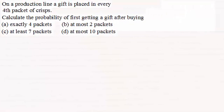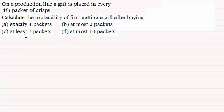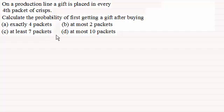Welcome to another video in my series on the geometric distribution. In this video I've got a typical question working out probabilities, with a good selection of questions which should show you all the different types you're going to get. On a production line, a gift is placed in every fourth packet of crisps. Calculate the probability of first getting a gift after buying: exactly four packets, at most two packets, at least seven packets, and at most ten packets.